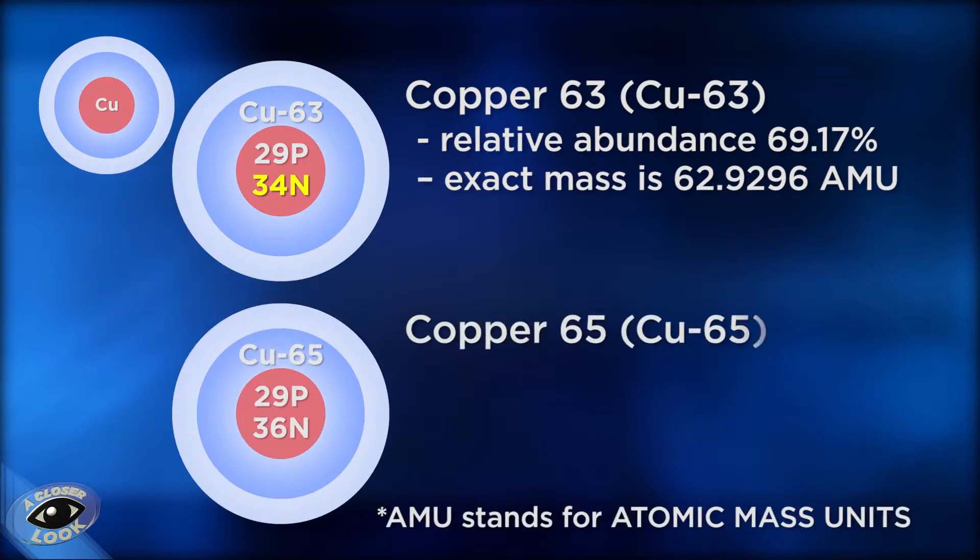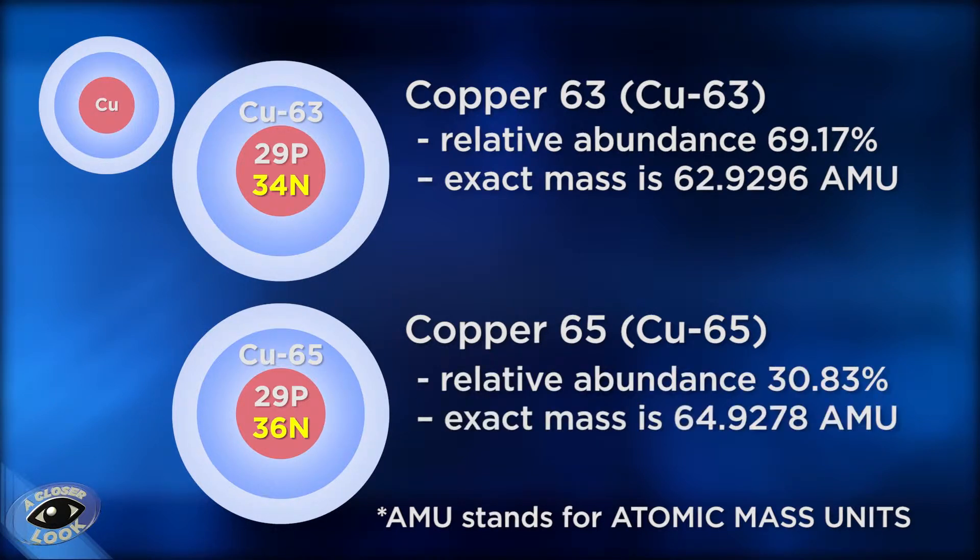The other isotope of copper is copper-65, which has an abundance of 30.83% and a mass of 65. This mass number is rounded up from the more accurate number of 64.9278 AMU.